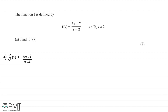In this question, we're told that the function f is defined by f(x) = (3x - 7) / (x - 2), where x is a real number and x ≠ 2. In part A, we're asked to find the inverse of f at 7, that is f⁻¹(7).